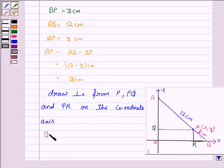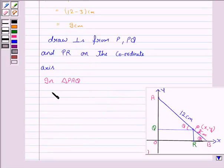In triangle PAQ, cos theta is equal to base upon hypotenuse. QP has length x and AP is 9 cm. So cos theta is equal to x upon 9.